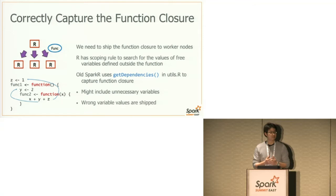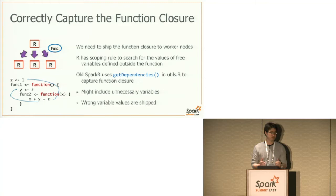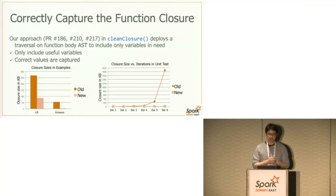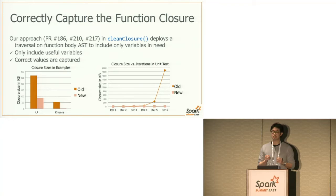However, R allows users to define free variables outside function scope. As you can see in this example, function two accepts a variable X as a function argument, but variables Y and Z are free variables defined outside the scope of function two. R has a scoping rule to search for their values in enclosed environments. In the old version of SparkR, a utility function called getDependencies was used to capture function closure, which could lead to two drawbacks: including unrelated variables making closure unnecessarily large, or including wrong values if the user updated variable values before the closure was captured. Our approach creates a new utility function called clean_closure, which traverses the AST — the syntax tree of the function body — and examines each node to decide whether a variable should be included, solving both problems by including only useful variables with correct values.